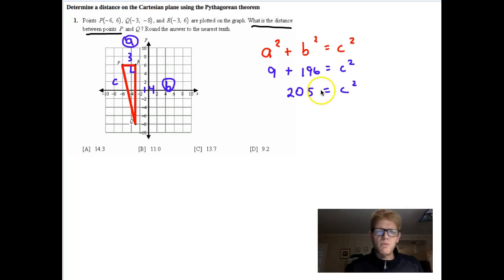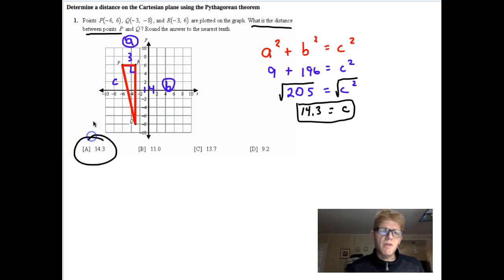And again, I don't want C squared. I want C. So I have to take the square root of C squared. And to keep it balanced, I have to take the square root of 205. That's going to give me that C is equal to 14.3 and a bunch of digits. We're supposed to round to the nearest tenth. So it will be 14.3. And there you have it.